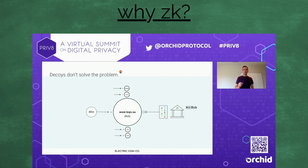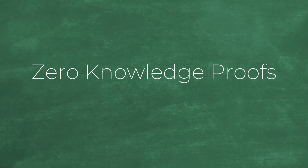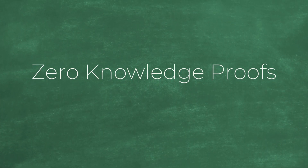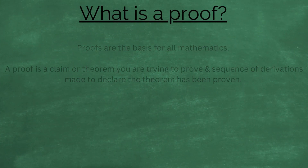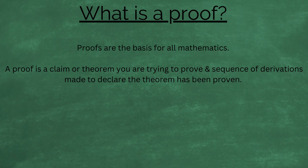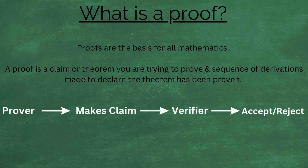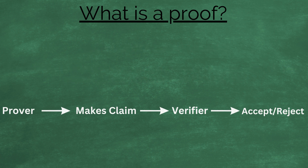And I can show you why by thinking about information leakage instead of thinking about privacy. What is a proof? Proofs are the basis for all mathematics. A proof is a claim or theorem you're trying to prove, and a sequence of derivations made to declare the theorem has been proven. So the sequence is: a prover makes a claim to a verifier who can then accept or reject it.